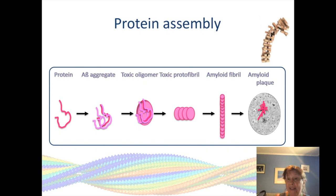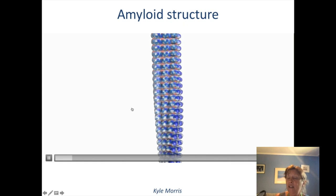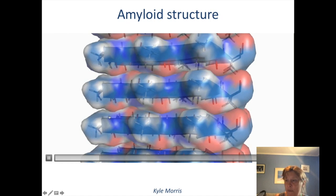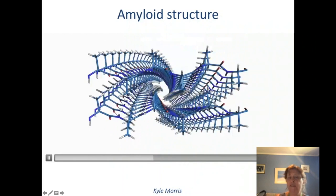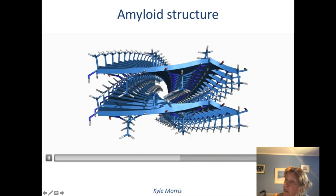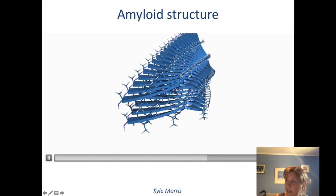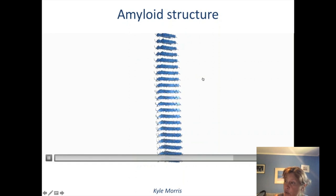Going back to amyloid structure: this little movie was built by someone in my lab called Kyle Morris, a PhD student. These are beta strands — our protein chains — and those little dots represent hydrogen bonding. This massive network of hydrogen bonding makes the structure very, very stable — like putting nails into the structure. Looking down the fiber axis, we can see amino acid side chains interdigitating to form this stable structure. This shows you the structure of a protofilament — all these beta strands forming a very repetitive structure.